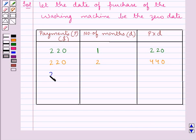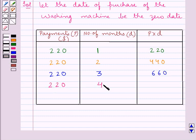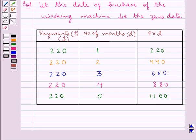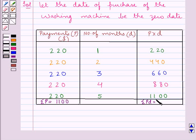The second installment is $220, D is 2, and P×D is $440. The third installment is $220, D is 3, and P×D is $660. The fourth installment is $220, D is 4, and P×D is $880. The last installment is $220, D is 5, and P×D is $1,100. So summation P equals $1,100 and summation PD equals $3,300.